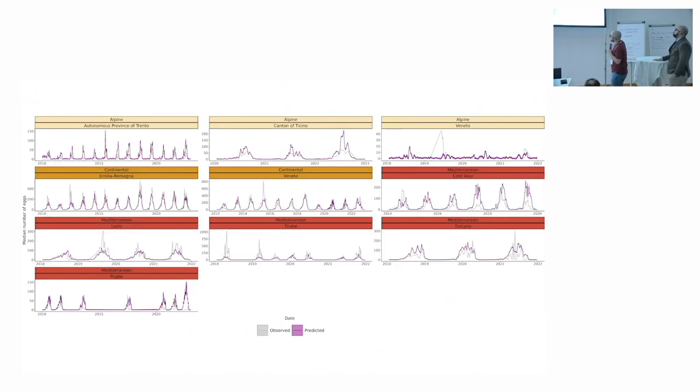This is just an insight, again, on the external validation data set, disaggregated not only by geographical region, but also by region. In this case, we see that, for example, in the alpine area, in Switzerland, in the canton of Ticino, and in the autonomous provinces of Trento, the temporal trends were quite okay. In Veneto, for example, in northeast Italy, the predictions were not good at all. But we have very low observant values. For Emilia-Romagna, in the continental area, it worked pretty well, and as well in Lazio region in the Mediterranean area.